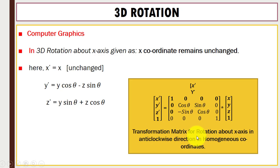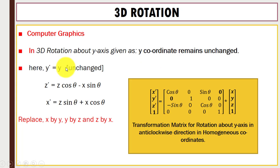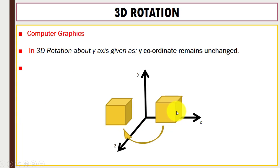Using homogeneous coordinates, we can express the transformation matrix for rotation about the x-axis in the anticlockwise direction, and similarly the transformation matrix for rotation about the y-axis. For y-axis rotation, the y-coordinate remains unchanged, and we apply rotation in the x-z plane. An example shows the object rotated along the x-z plane.